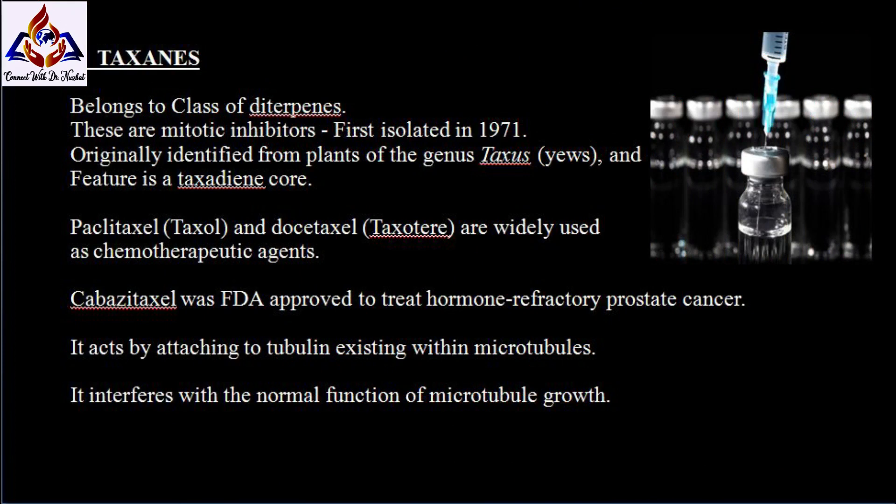Taxanes are a class of diterpenes originally identified from plants of the genus Taxus and feature a taxadiene core. Paclitaxel and docetaxel are widely used as chemotherapy agents. Cabazitaxel was FDA approved to treat hormone-refractory prostate cancer. Paclitaxel is a mitotic inhibitor that was first isolated in 1971 from the bark of the Pacific yew tree.